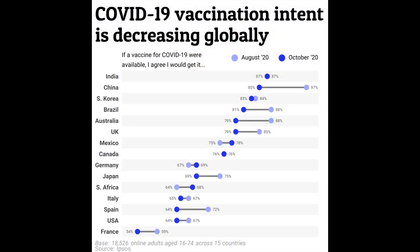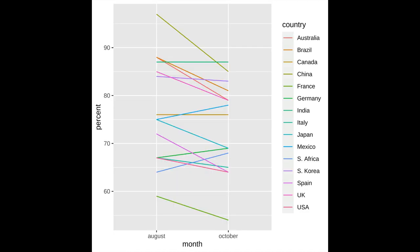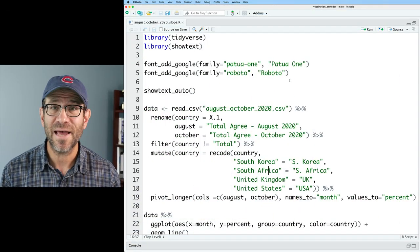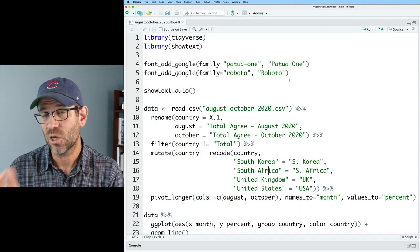Hey folks, I'm Pat Schloss and this is Code Club. In the last episode, we converted the dumbbell chart or barbell chart into a slope chart. Again, there are many problems with this visual, but one of the big problems is that we don't tell the audience what they're looking at. So in this episode, we're going to use the labs function to add some text annotation to the figure: a title, an annotation, x and y axis labels, and to modify the title of our legend.